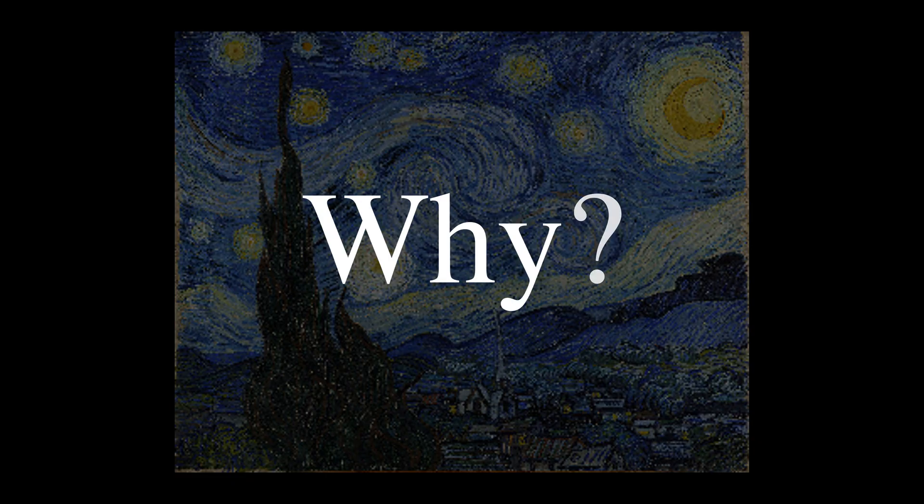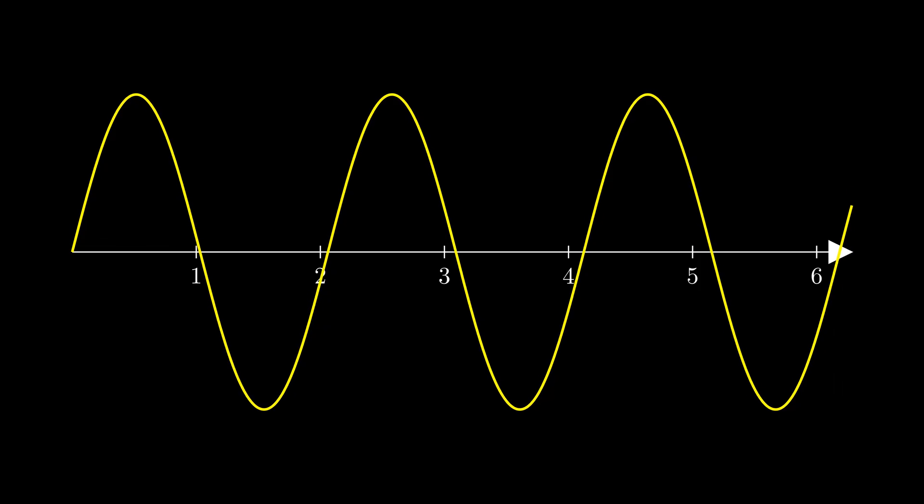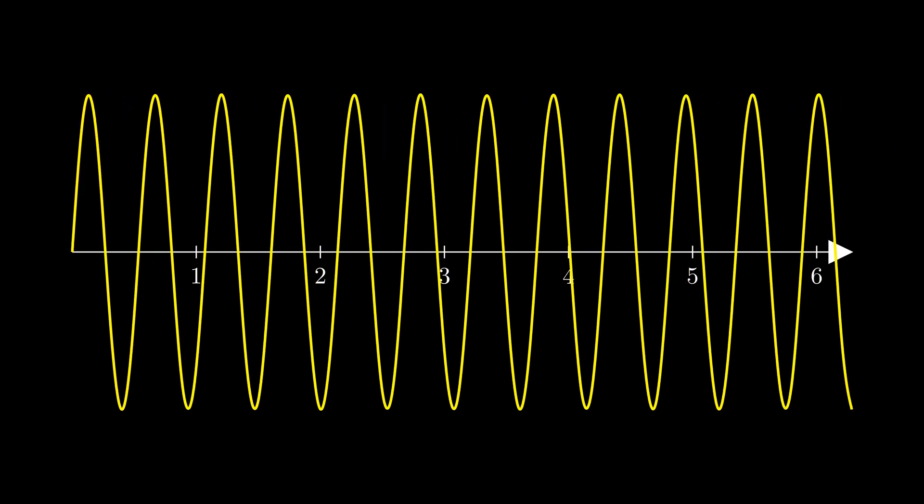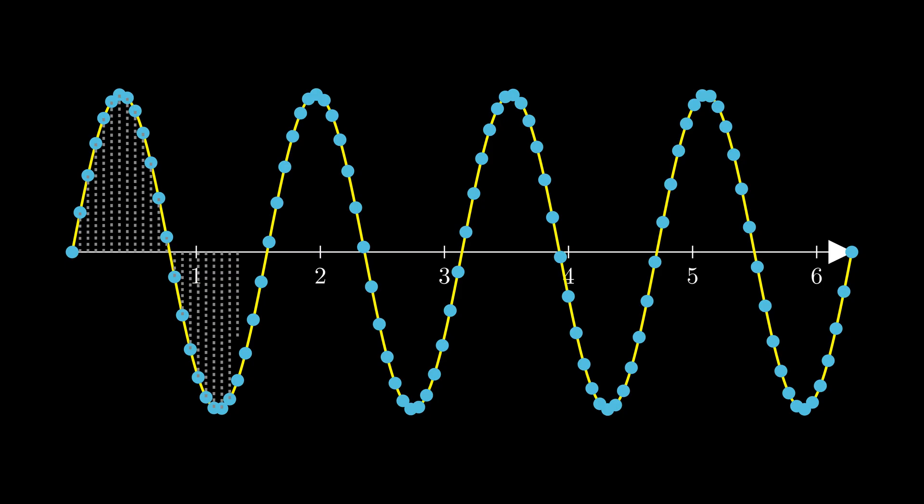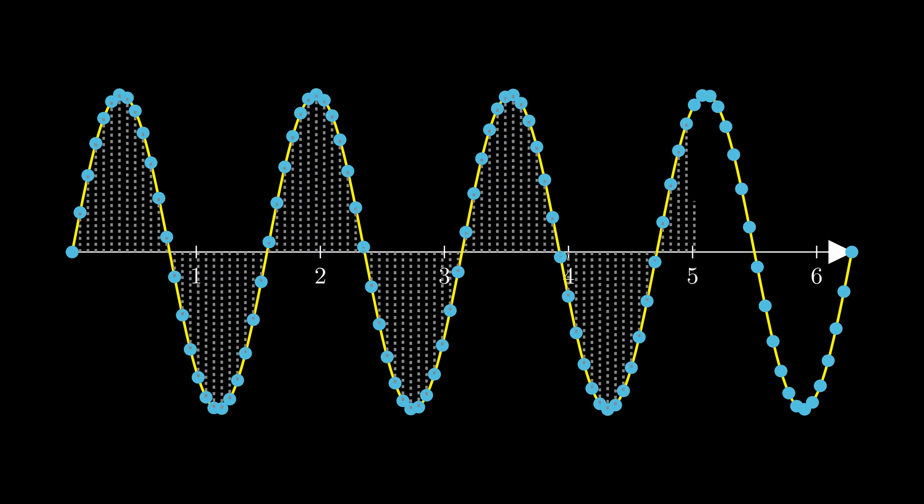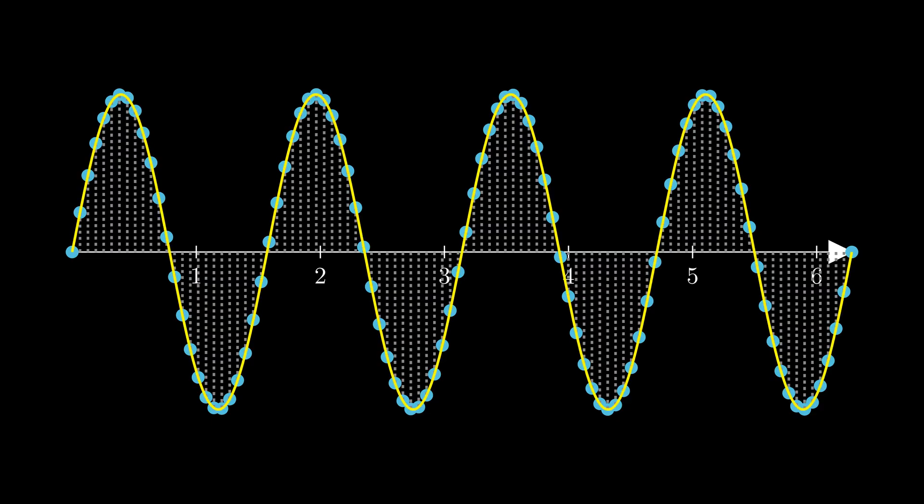To answer this, we need to understand how sampling works. Imagine a smooth sine wave. It's a continuous function. But computers cannot store continuous signals. They work with discrete data. So we need to sample the signal. We do this by taking discrete samples, essentially picking points along the wave. It still looks like the original function. The samples capture the signal well.